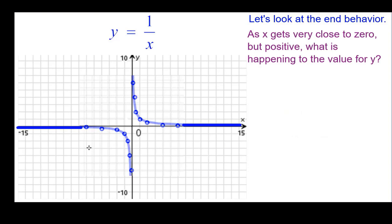So as x gets very close to zero, that's this direction right here. What is happening to y? For example, if x is a thousandth, what is y? Well, the reciprocal of a thousandth is one thousand. And so we would plot the thousandth and go way up to a thousand.